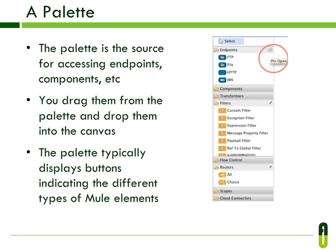The second component is the palette. The palette is the source for accessing endpoints, components, transformers, and cloud connectors. You drag them from the palette and drop them into the canvas to create flows. The palette typically displays buttons indicating different types of Mule elements. You can view the content of each button by clicking on it, and click again to hide the content.